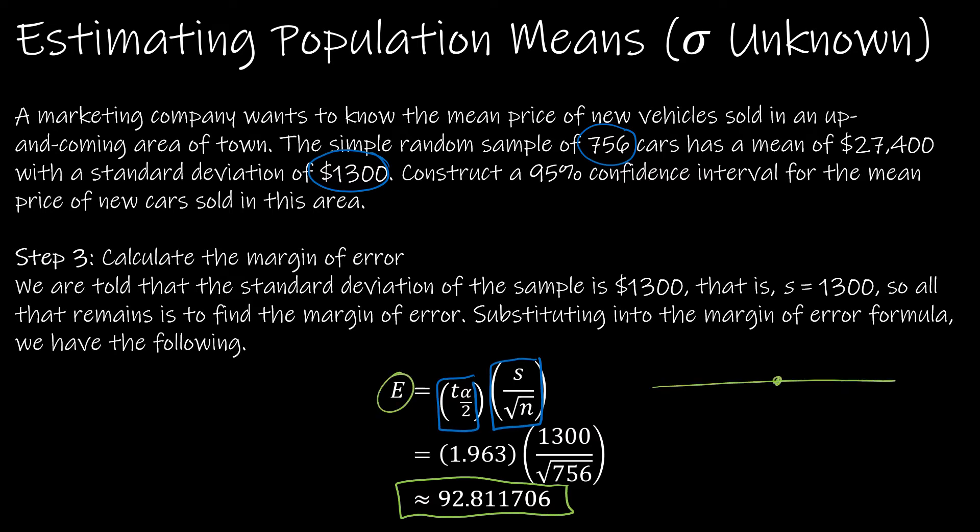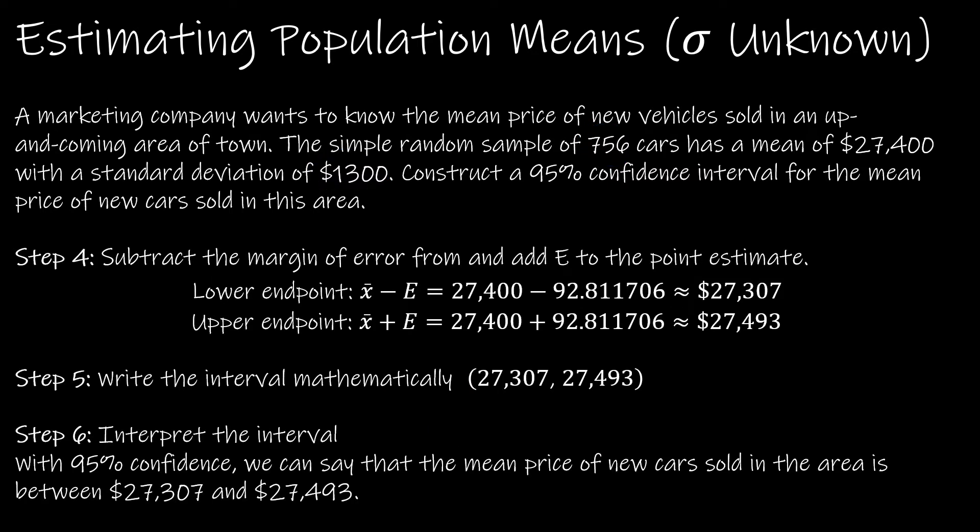Here I have a solution of 92.811, and remember this is the margin of error. Recall we're going to have some point estimate in the middle, which is $27,400, and we're going to go the margin of error in each direction. So minus 92.812 and then add 92.812. So that is step four: subtract the margin of error and add the margin of error to the point estimate.